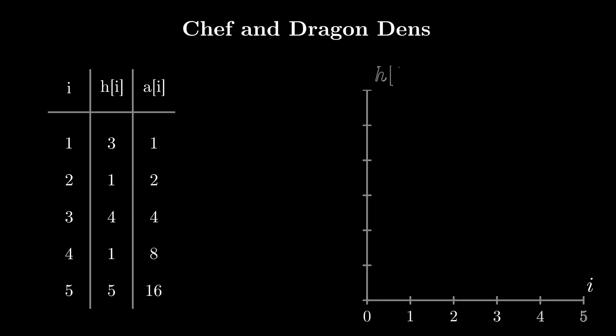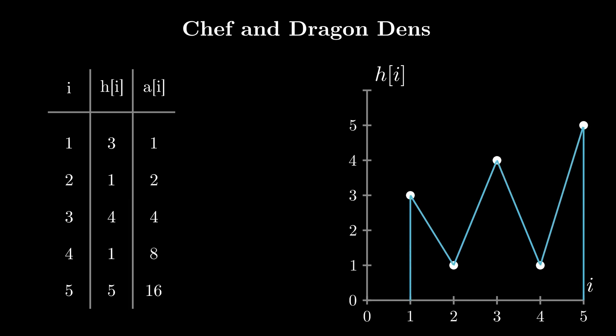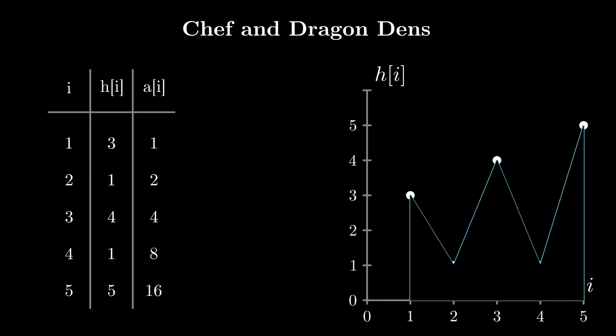If we were to plot the n points on a graph with i on the x-axis and h[i] on the y-axis, and connect points i and i+1 for all i ≥ 1 and i < n, the part underneath the figure formed touching the x-axis will be called the solid portion of our graph.